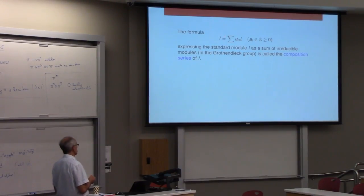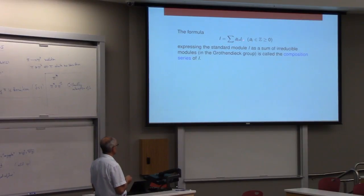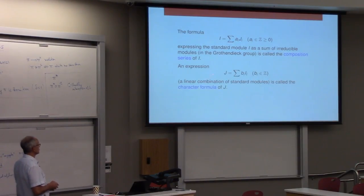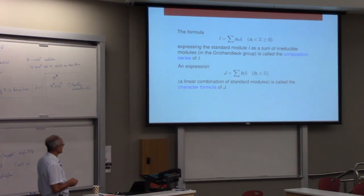And so the idea is, so this is just some terminology. You write a standard module as a sum of irreducibles. That's called the composition series of I. And the inverse relationship where you write an irreducible as a linear combination of standards is called the character formula of J. And I mention here, these Z's are not negative, but these B's can be any integers.